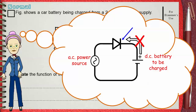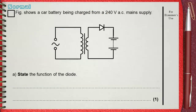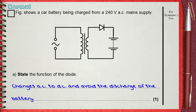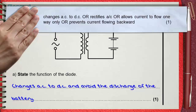So our simple answer is: the function of the diode is to change AC to DC and to avoid the discharge of the battery. The mark scheme gives one mark for: change AC to DC, or rectifies AC, or allow current to flow in only one direction, or prevents current flowing backwards. All these possibilities give the same meaning.